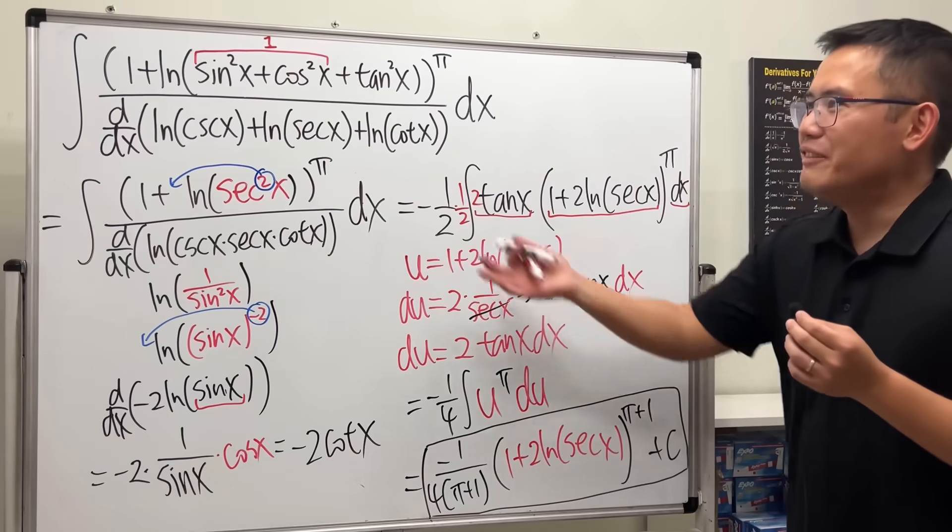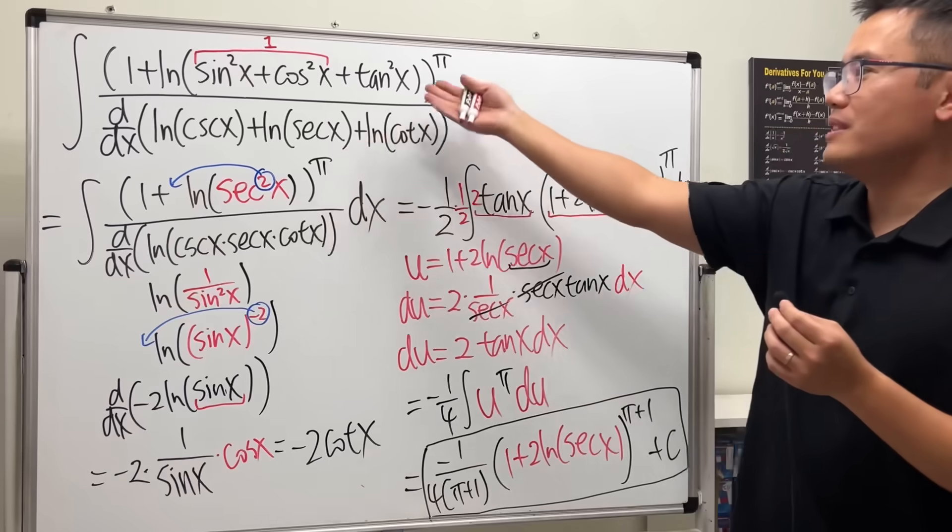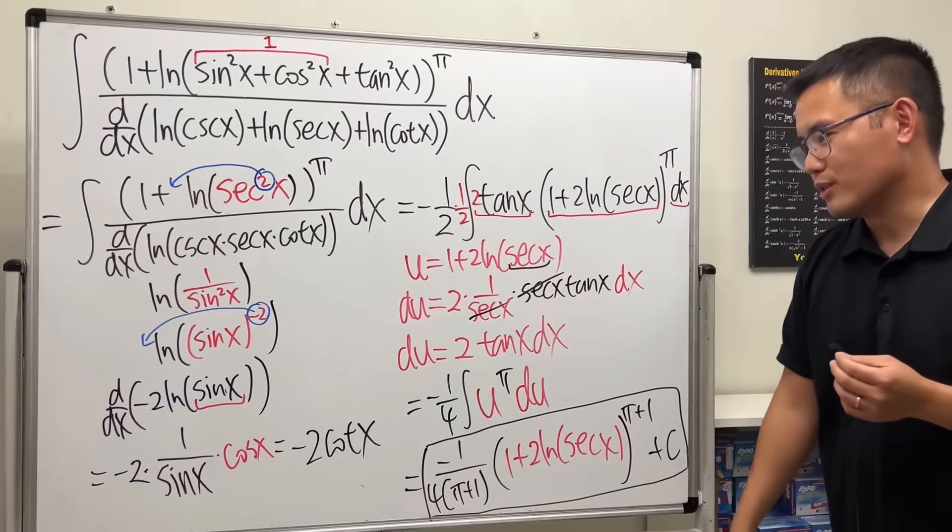It's not so bad. Everybody's here: sine, cosine, tangent, cosecant, secant, cotangent. I love this one so much.